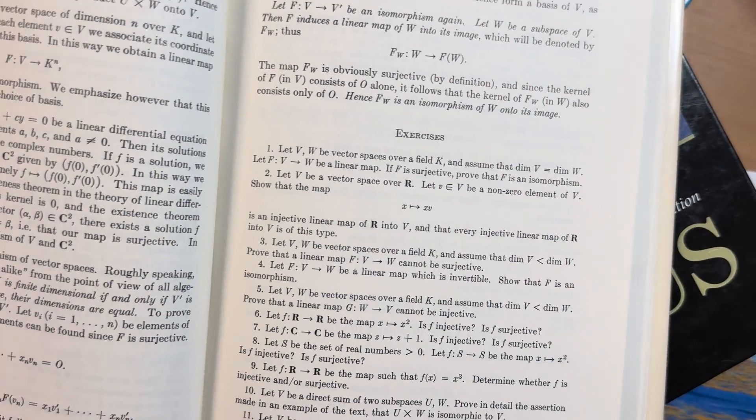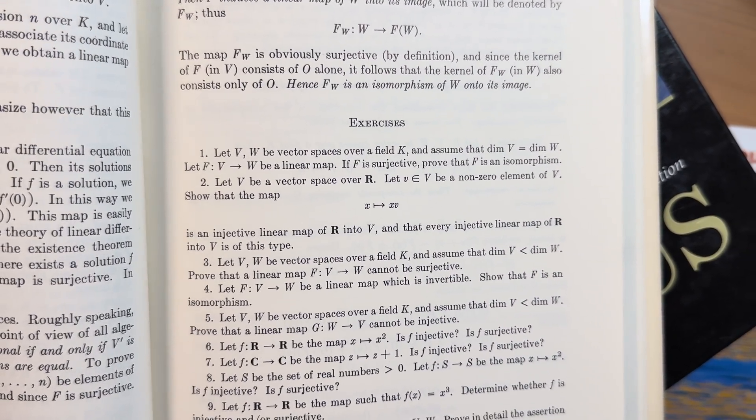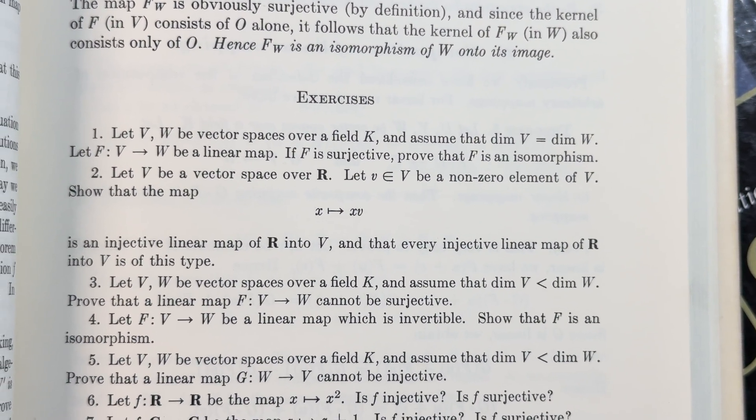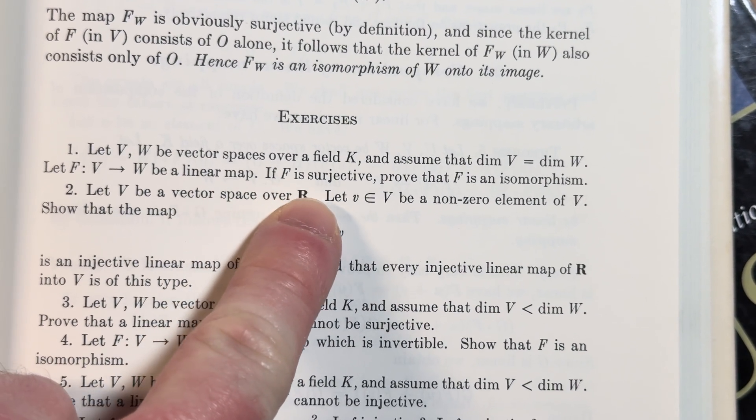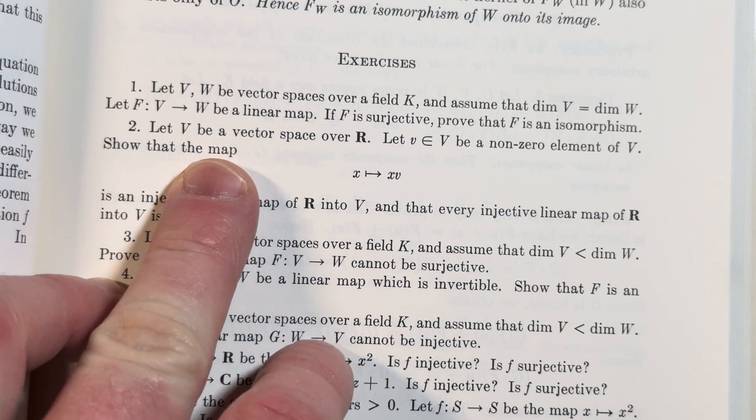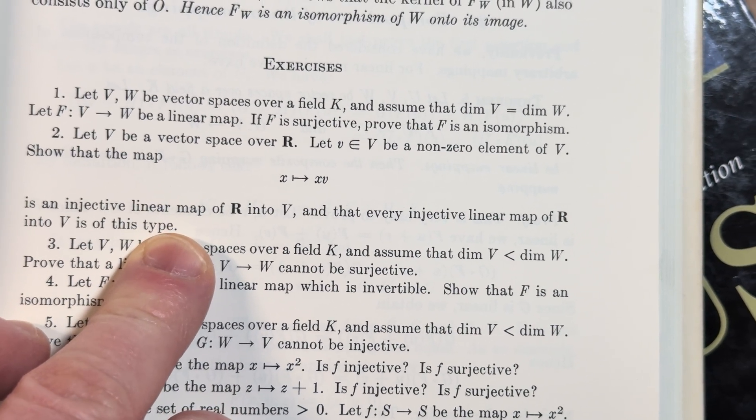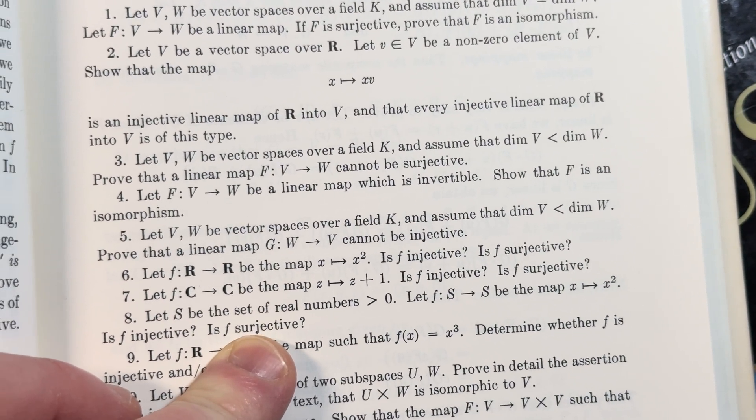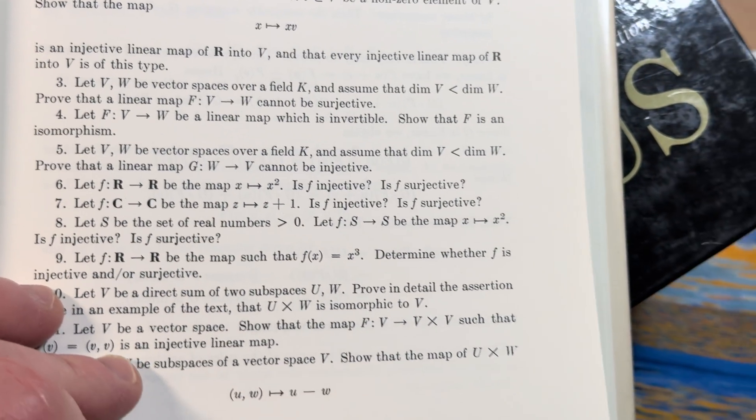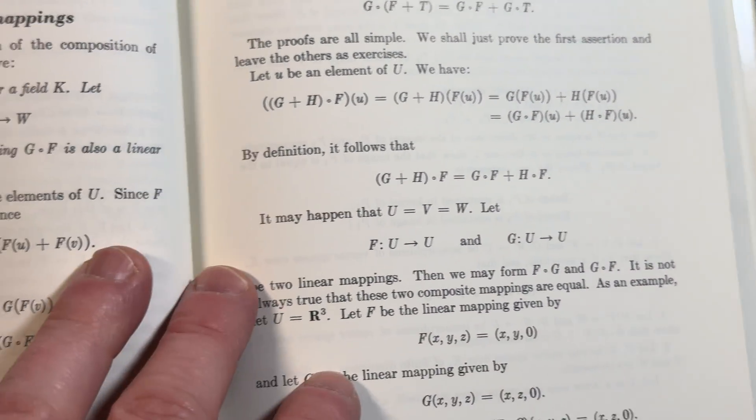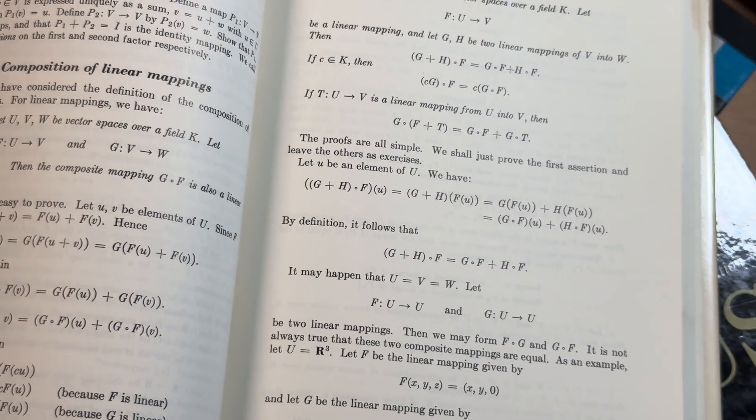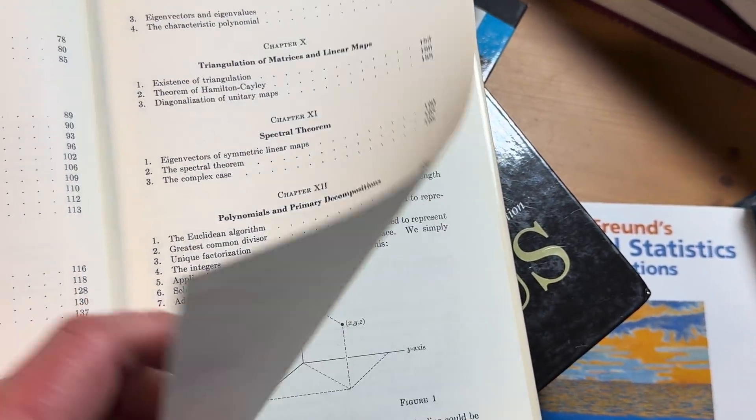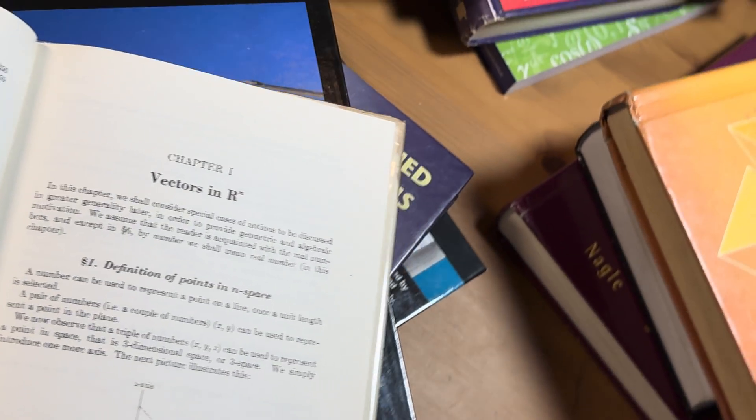Dimensions of kernel and image. Look at these exercises here. Let V and W be a vector space over a field K. And assume that dimension of V is equal to the dimension of W. Let F be a linear map. If F is surjective, prove that F is an isomorphism. Cool. There's another one. These are cool. Fun little problems, right? These look pretty cool. The compositions of linear mapping. So you see, it's got a lot of serious theory. No solutions. Let's go back to the contents just to double check. I'm not seeing any. Yeah, no solutions.